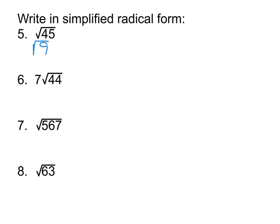So my root 45 is going to become root 9 times root 5. And then we take the square root of 9, because we can simplify that part. The square root of 9 is 3, so it becomes 3 root 5.